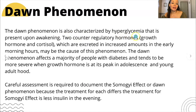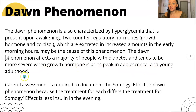The Dawn phenomenon is characterized by hyperglycemia — high blood glucose — that is present upon awakening. Two counter-regulatory hormones, growth hormone and cortisol, which are excreted in increased amounts in the early morning hours, may be the cause of this phenomenon. The Dawn phenomenon affects a majority of people with diabetes and tends to be more severe when growth hormone is at its peak in adolescence and young adulthood. Careful assessment is required to document the Somogyi effect or Dawn phenomenon because the treatment for each differs.